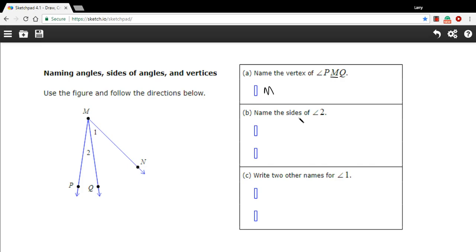B says name the sides of angle number two. Well, angle number two is this PMQ or QMP. And the sides here are the line that runs from M to P. And actually, this is a ray starting at M and going out through P. So we would write that like this,